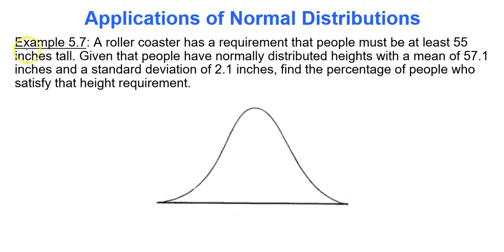So a roller coaster, who loves roller coasters? Yeehaw. A roller coaster has a requirement that people must be at least 55 inches tall. Given that people have normally distributed heights with a mean of 57.1 inches and a standard deviation of 2.1 inches, find the percentage of people who satisfy that height requirement.